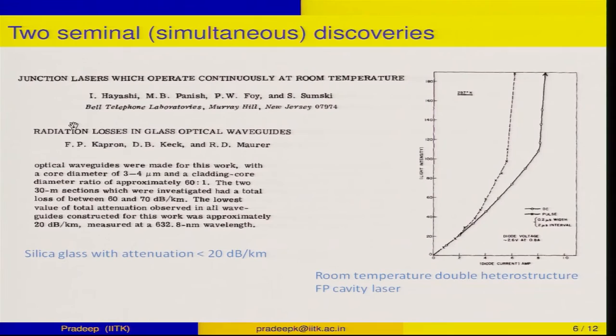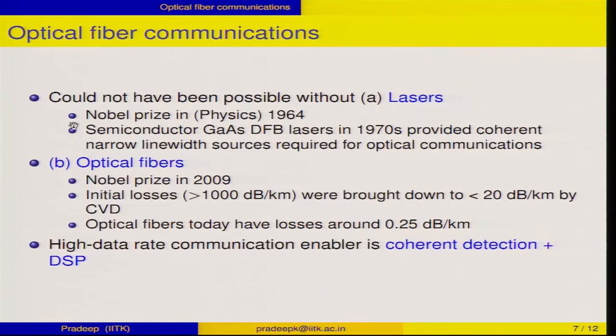Optical communications was made possible by two seminal discoveries. One was junction lasers that could operate at room temperature, which happened in 1970. Similarly, silica glass was manufactured with attenuation less than 20 dB per kilometer — the so-called barrier of 20 dB per kilometer — also achieved in 1970. These two simultaneous discoveries have allowed optical communications to grow from a few kilobits per second in the early 70s to now terabits per second, and optical fiber communications would not be possible without lasers or optical fibers.